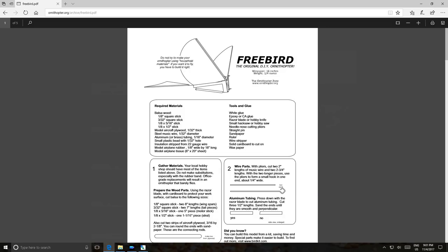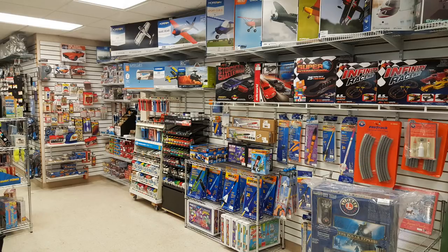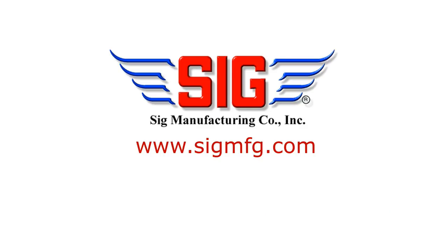All the materials are listed, and you can find them in a hobby shop. A craft store like Michael's or Hobby Lobby won't have everything you need. If you don't have a hobby shop in your area, you can order from SIG Manufacturing.